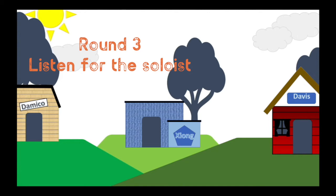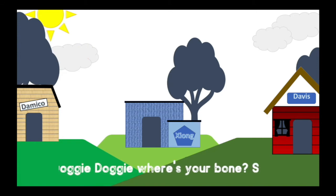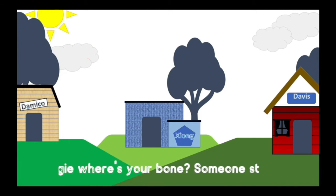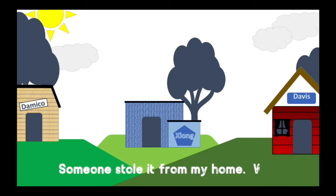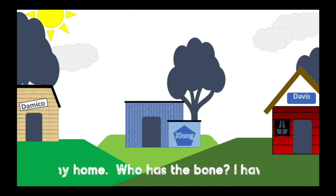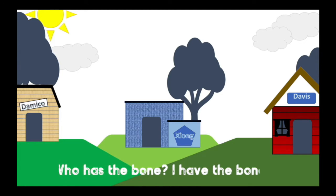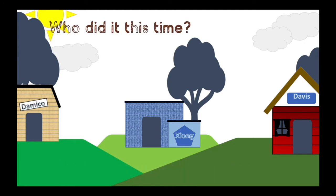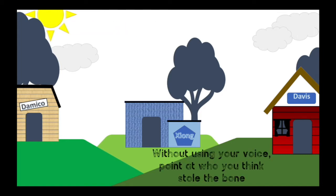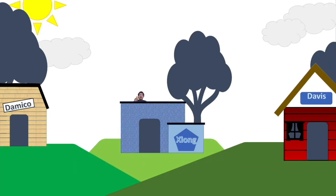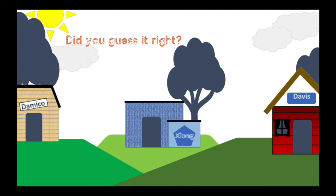Round three, listen for the soloist. Doggy, doggy, where's your bone? Someone stole it from my home. Who has the bone? I have the bone. Who did it this time? Without using your voice, point at who you think stole the bone. I have the bone. Did you guess it right?